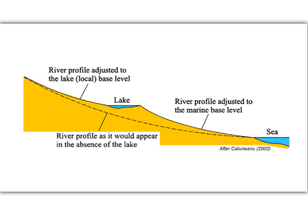Rejuvenation is the renewal of a river's energy in response to a relative falling base level. This may be due to a falling sea level or the raising of the land. The base level is the lowest point to which the river can flow and is usually sea level. There may, however, be a local base level at some point along the profile when a river meets a lake or a reservoir.